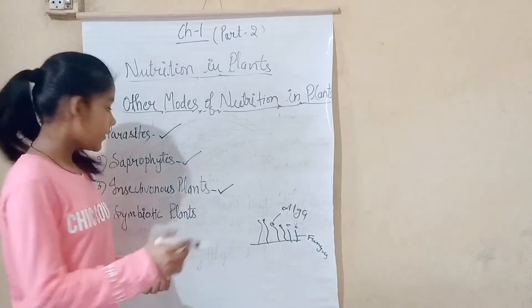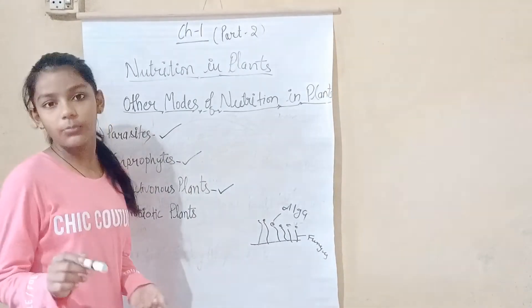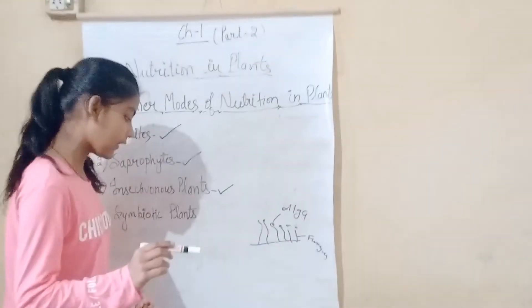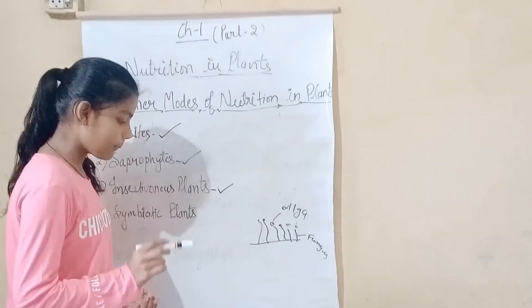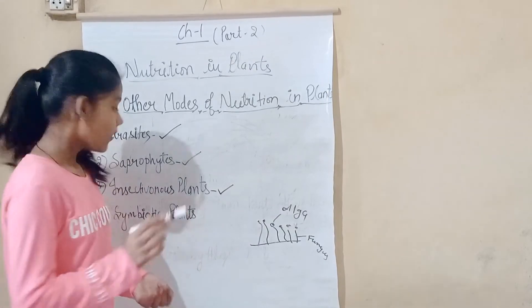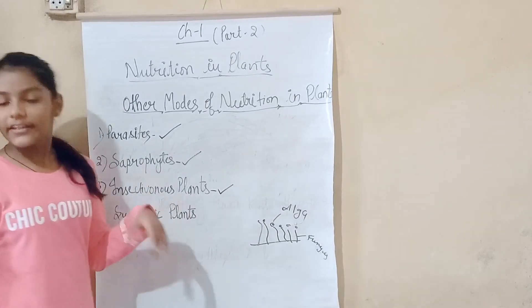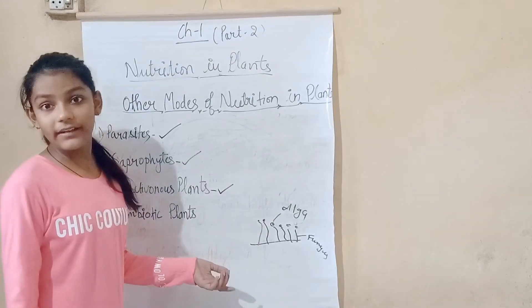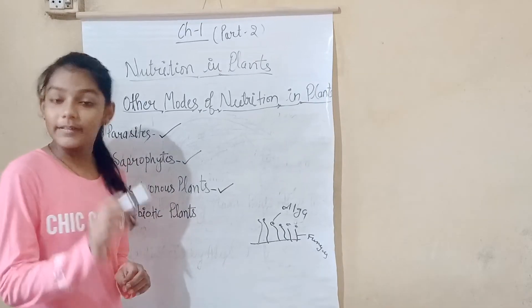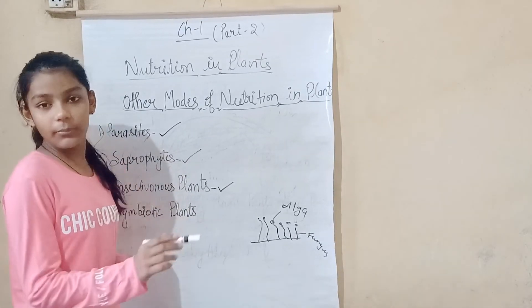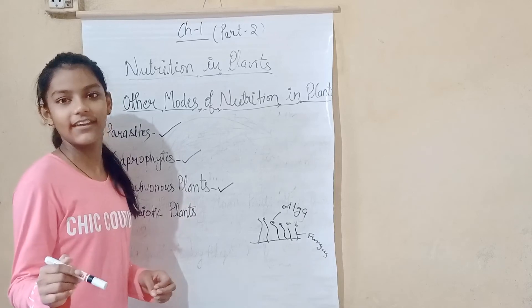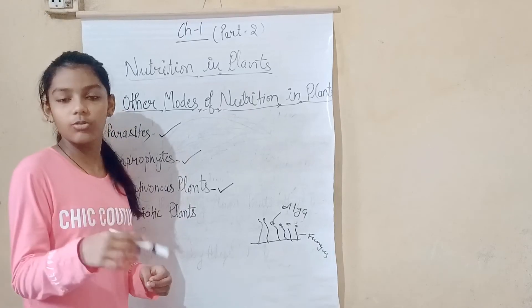Rhizobium bacteria and leguminous crops work together — examples of leguminous crops include gram, peas, beans, and pulses. The Rhizobium bacteria fix nitrogen compounds to support the growth of the crops, while the leguminous crops provide shelter in their roots for the bacteria. This mutual benefit is the symbiotic relationship.